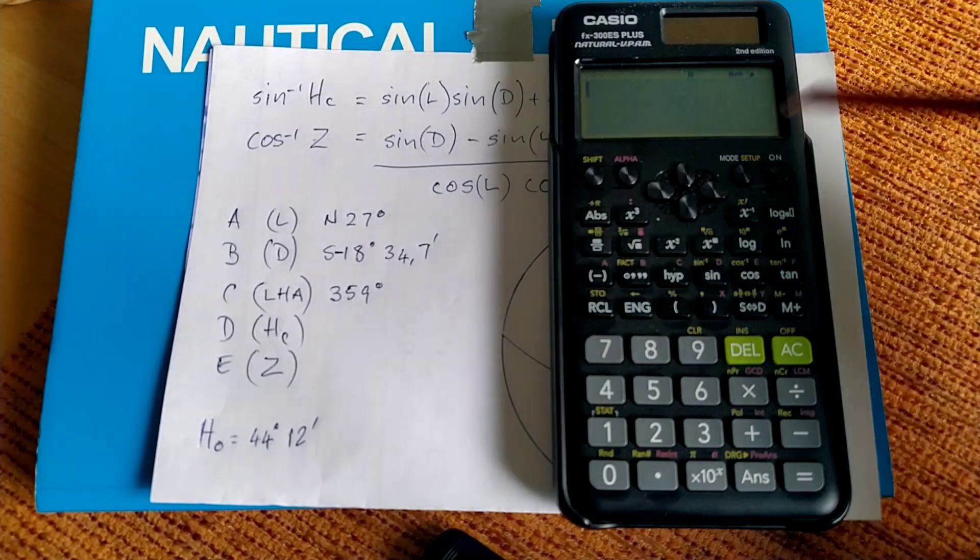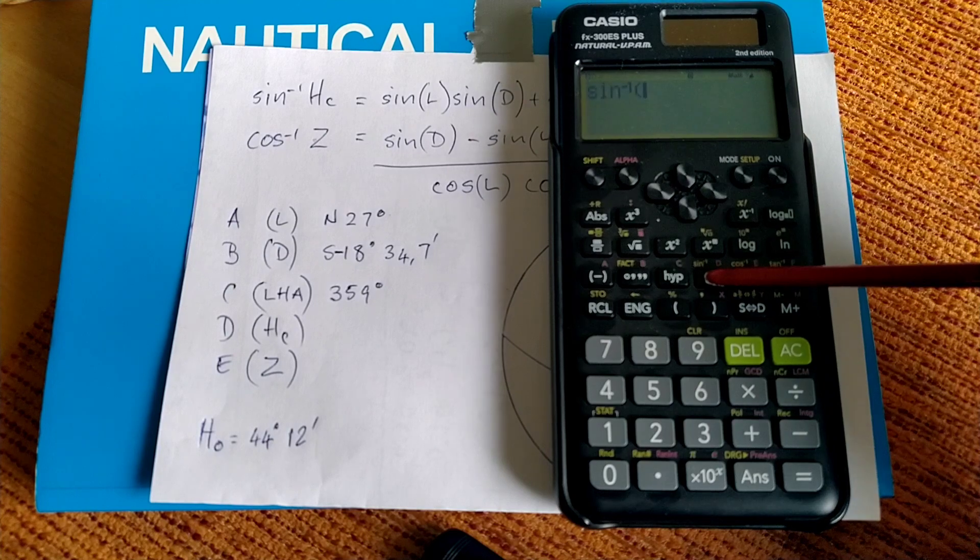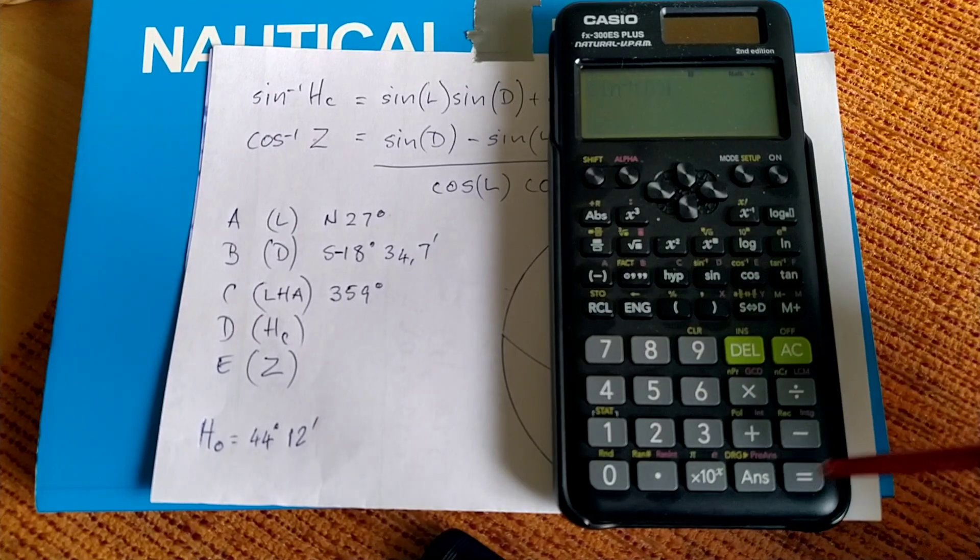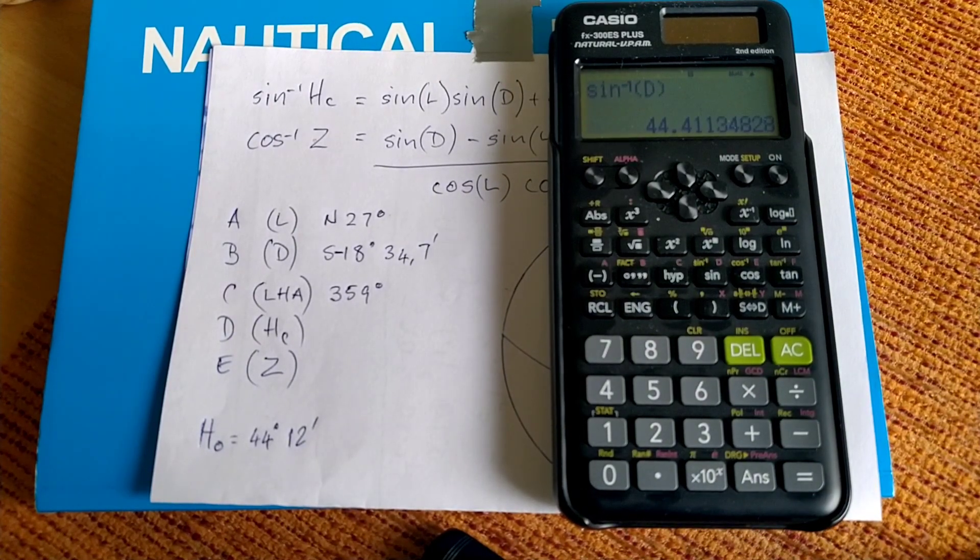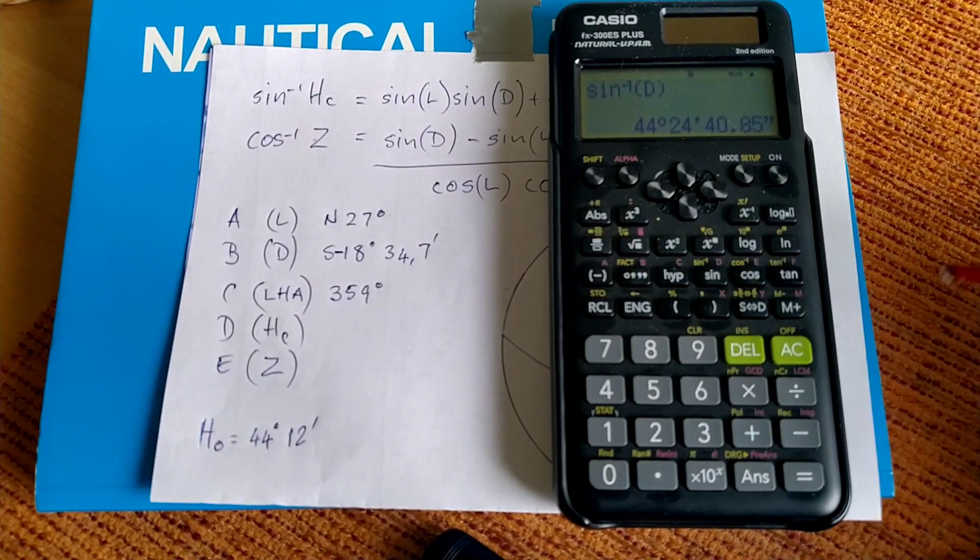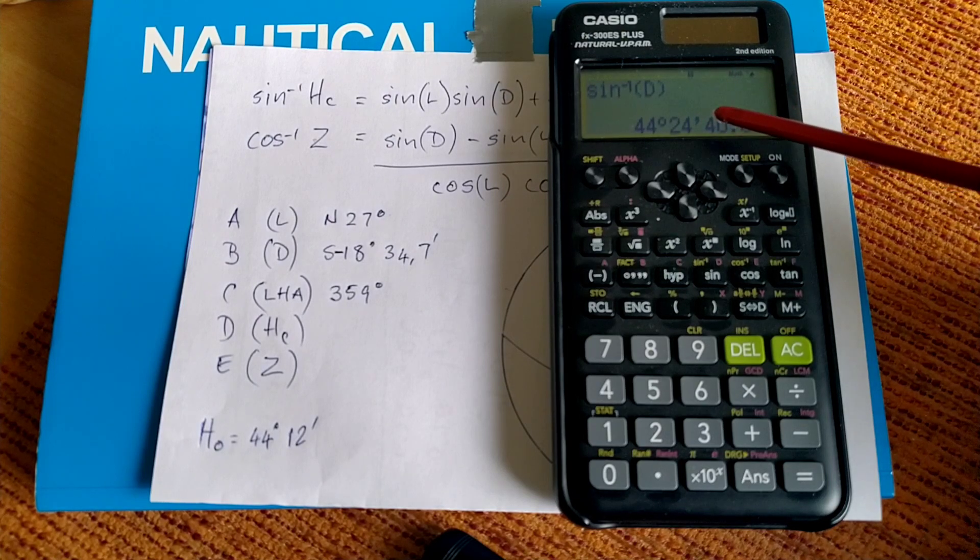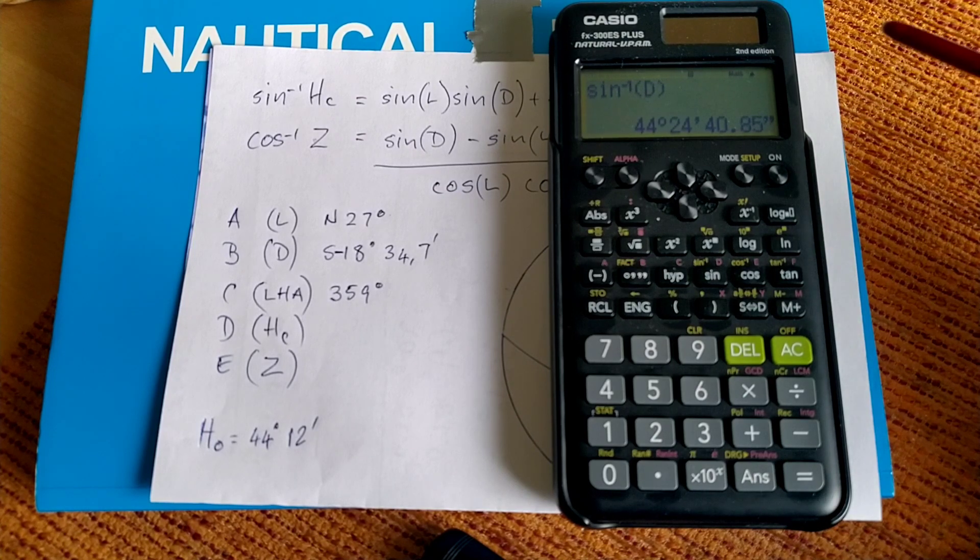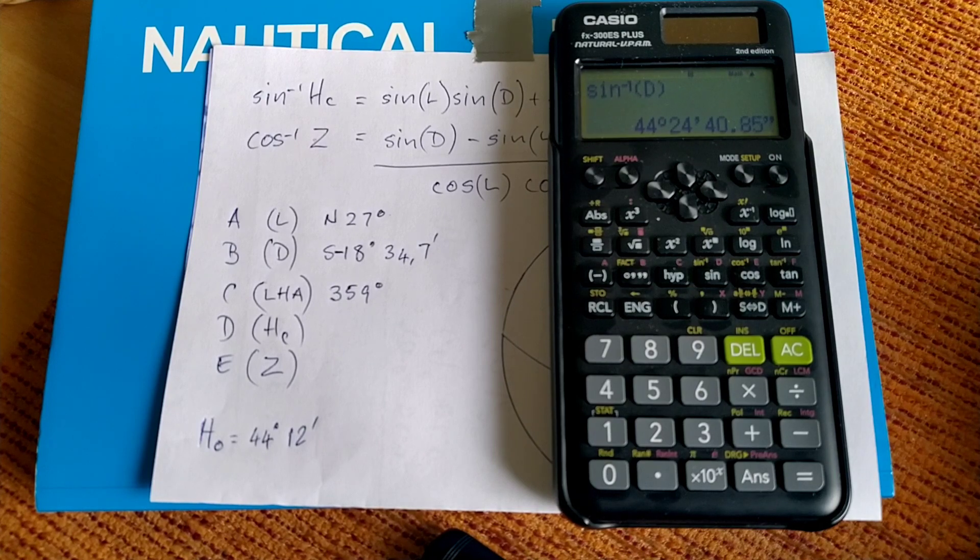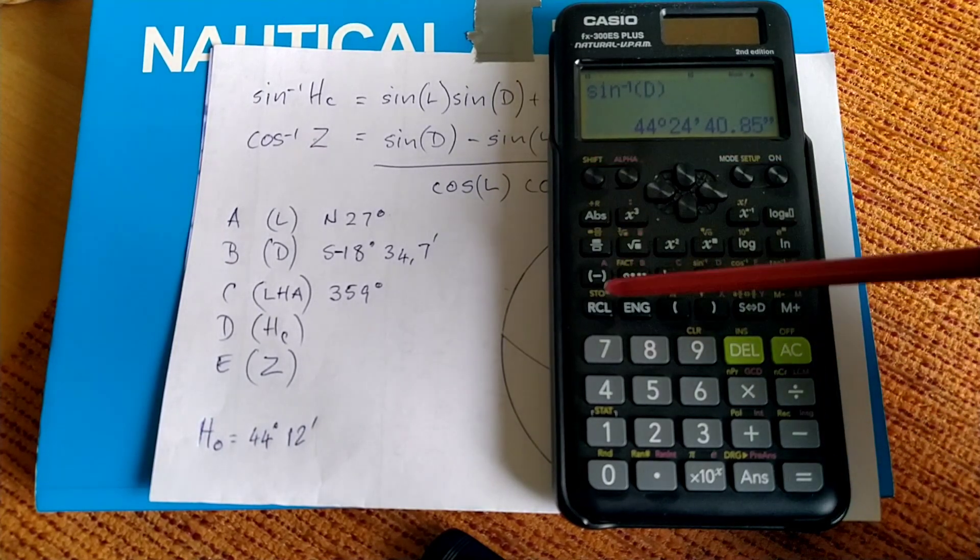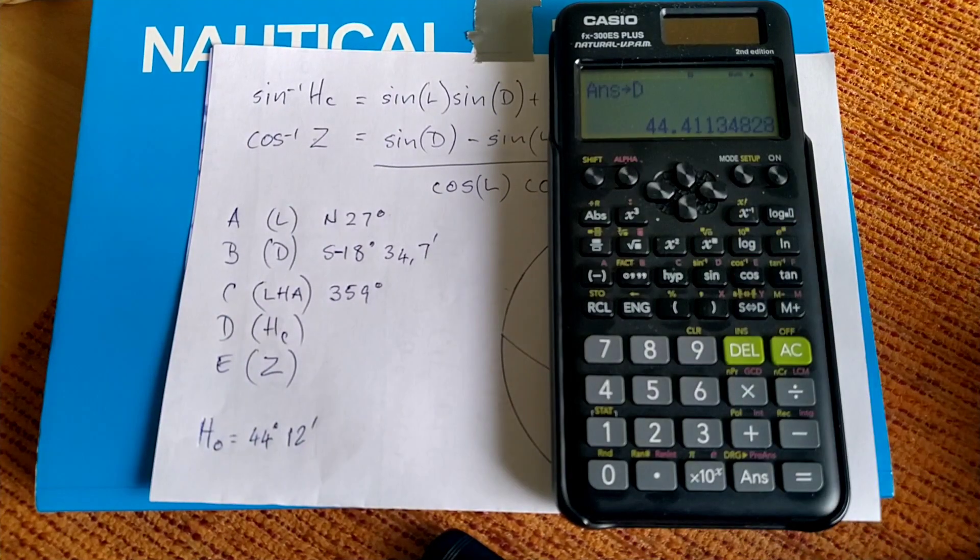Now we're going to determine the angle. Shift, inverse sine, recall, D, equals. There we go. So we have an angle of 44.411 degrees. We want that in degrees and minutes. So we hit this hexagesimal button again. There we go. 44 degrees and 24 minutes and 40 seconds. 40 seconds is around about two-thirds of a minute. So 44 degrees, 24.7. So now we're going to assign the angle to D. Shift, store, D.